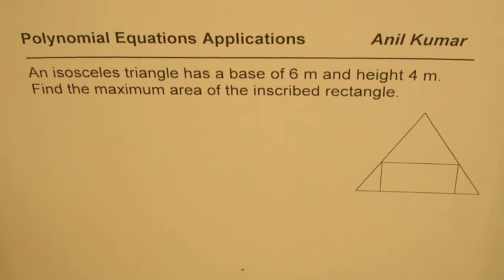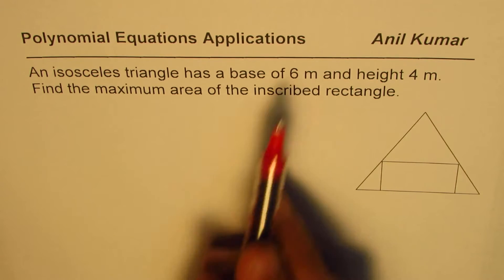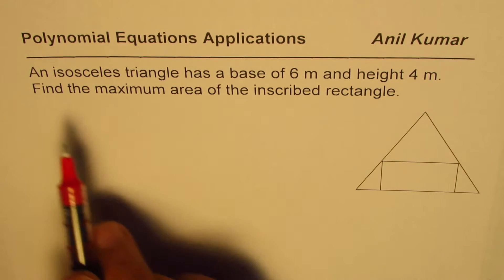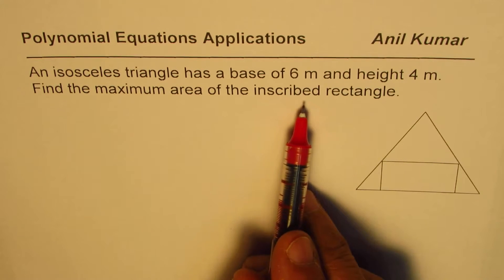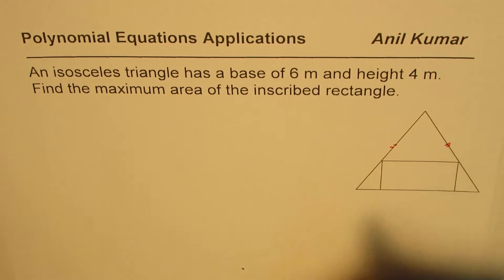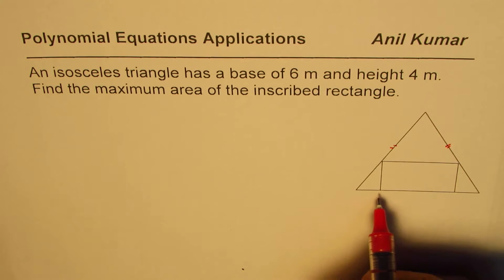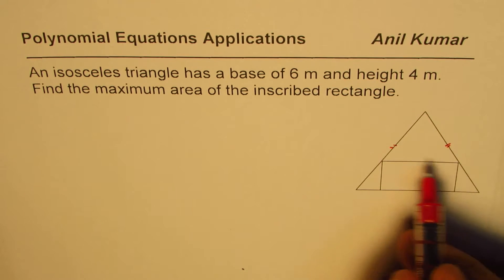I'm Anil Kumar sharing with you an application of polynomial equations. This particular question has been in test papers a couple of times, so I'd like you to pause the video, copy the question, and then look into my suggestions. The question is: an isosceles triangle has a base of 6 meters and a height of 4 meters. Find the maximum area of the inscribed rectangle.